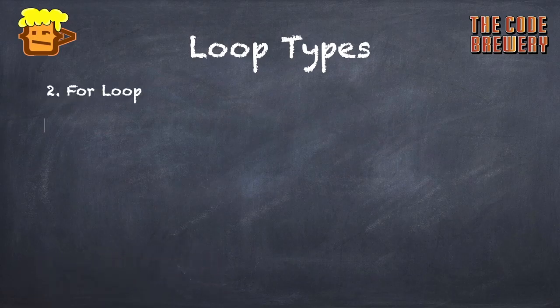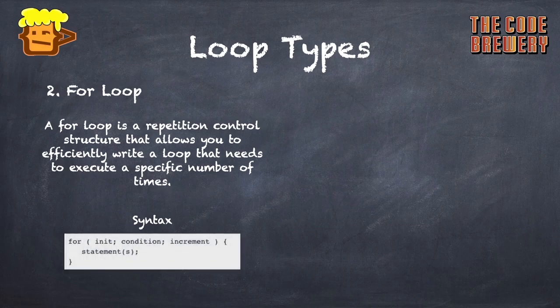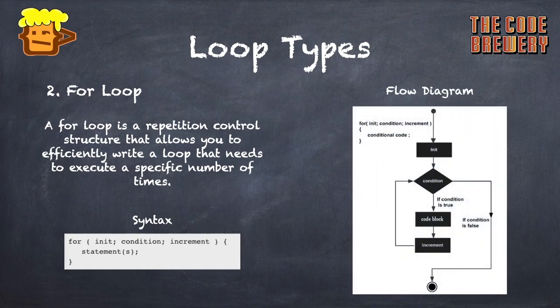Now the second one: the for loop. A for loop is a repetition control structure that allows you to efficiently write a loop that needs to execute a specific number of times. We know in advance how many times it has to be executed. It is the most used loop in C++ and is used in most code.